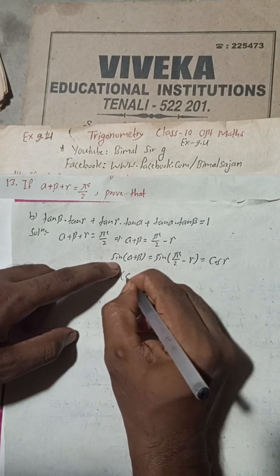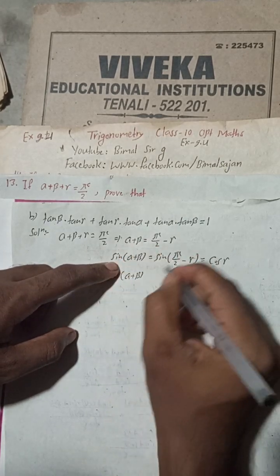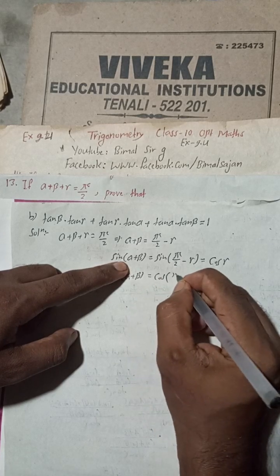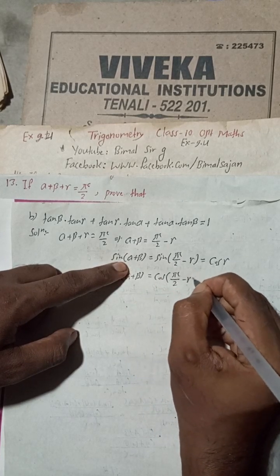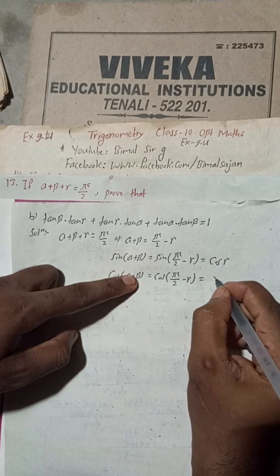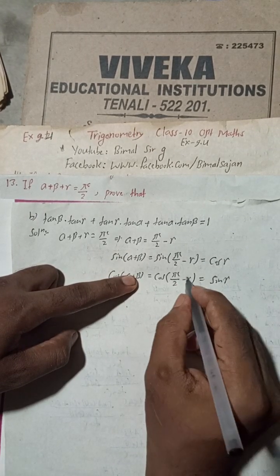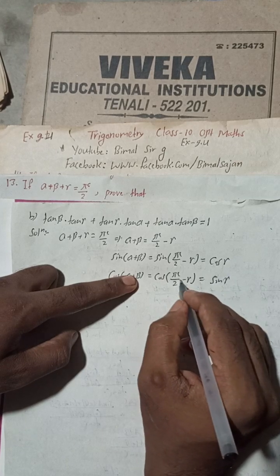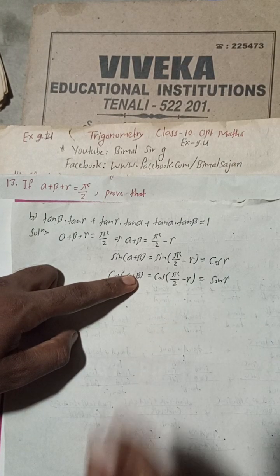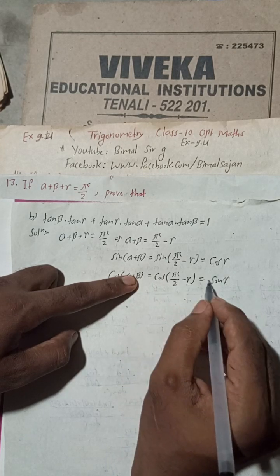Similarly, taking cos of both sides: cos(alpha plus beta) equals cos(pi/2 minus gamma). Since we are at 90 degrees, cos becomes sin, so cos(alpha plus beta) equals sin gamma, and it is in the first quadrant so it is positive.